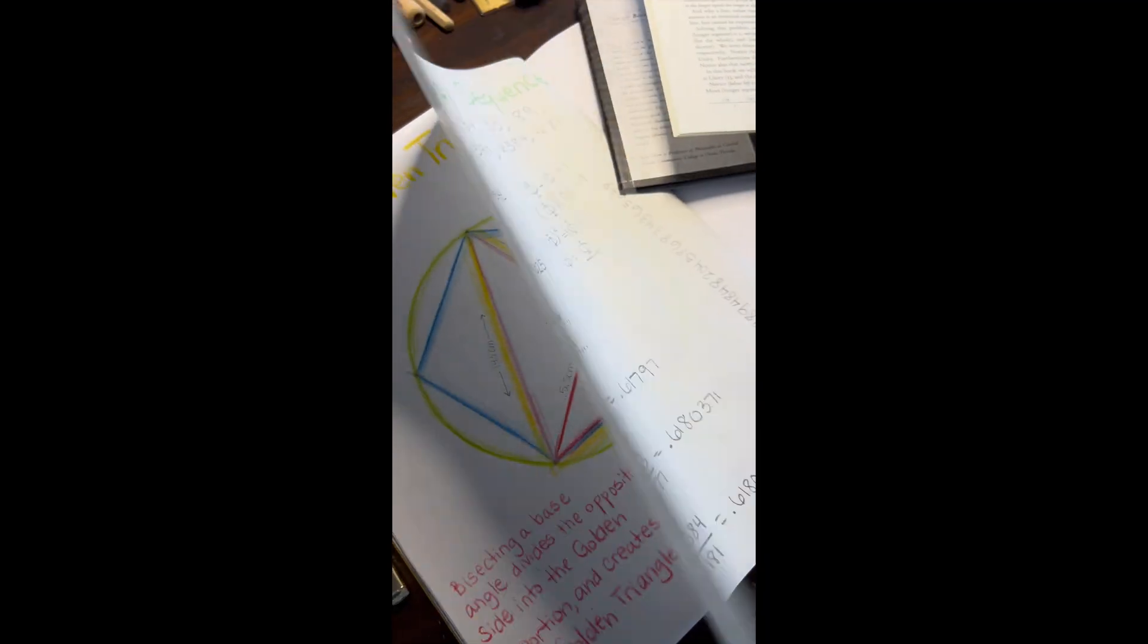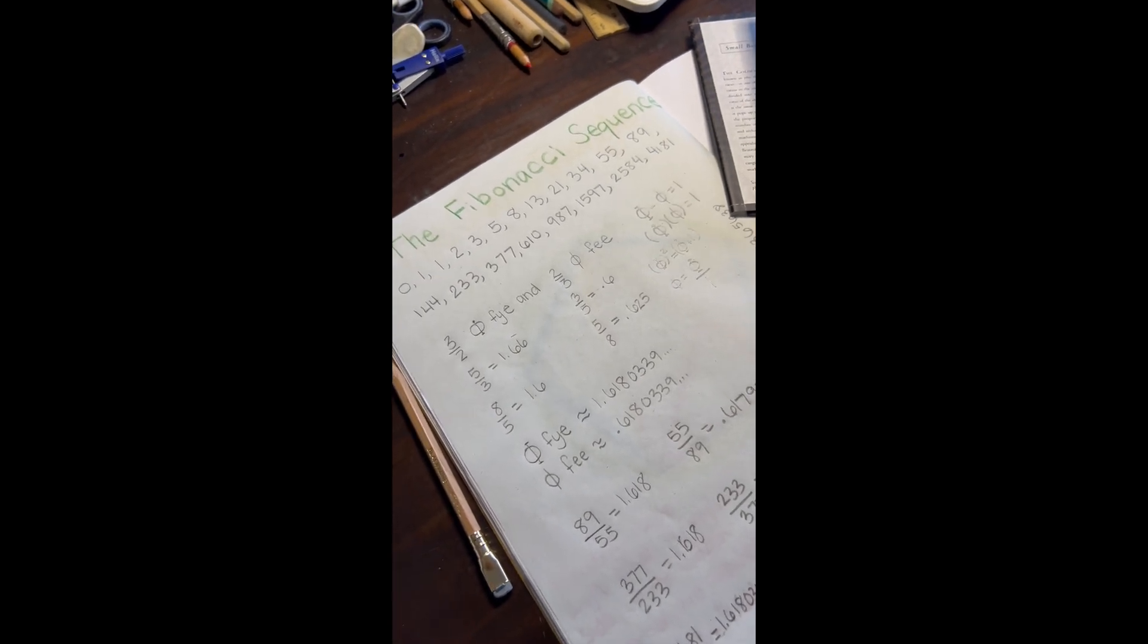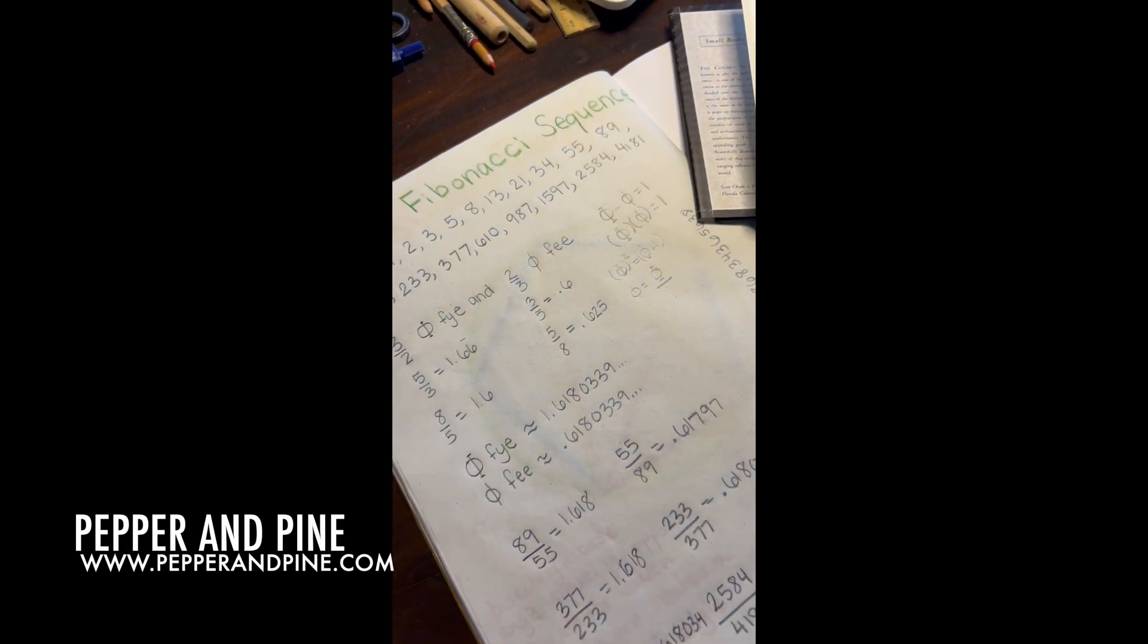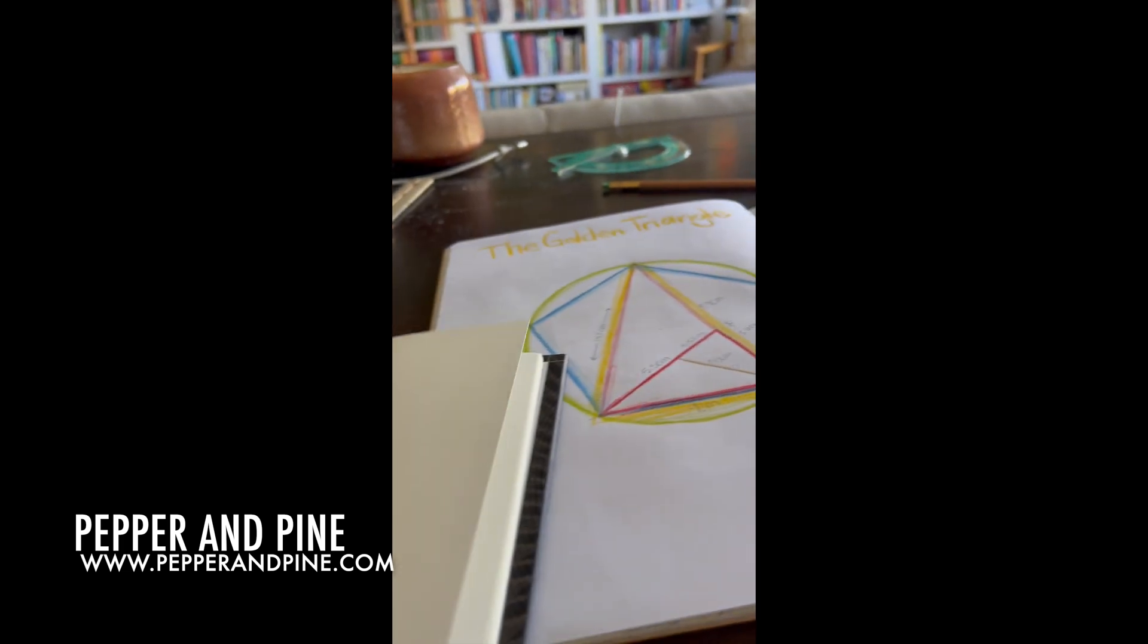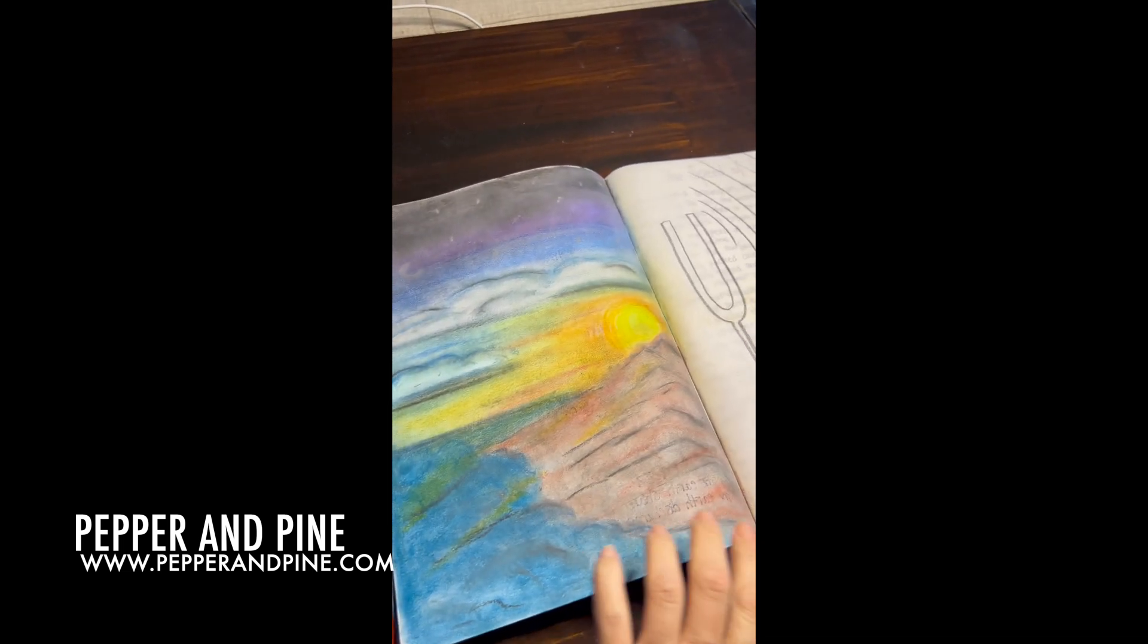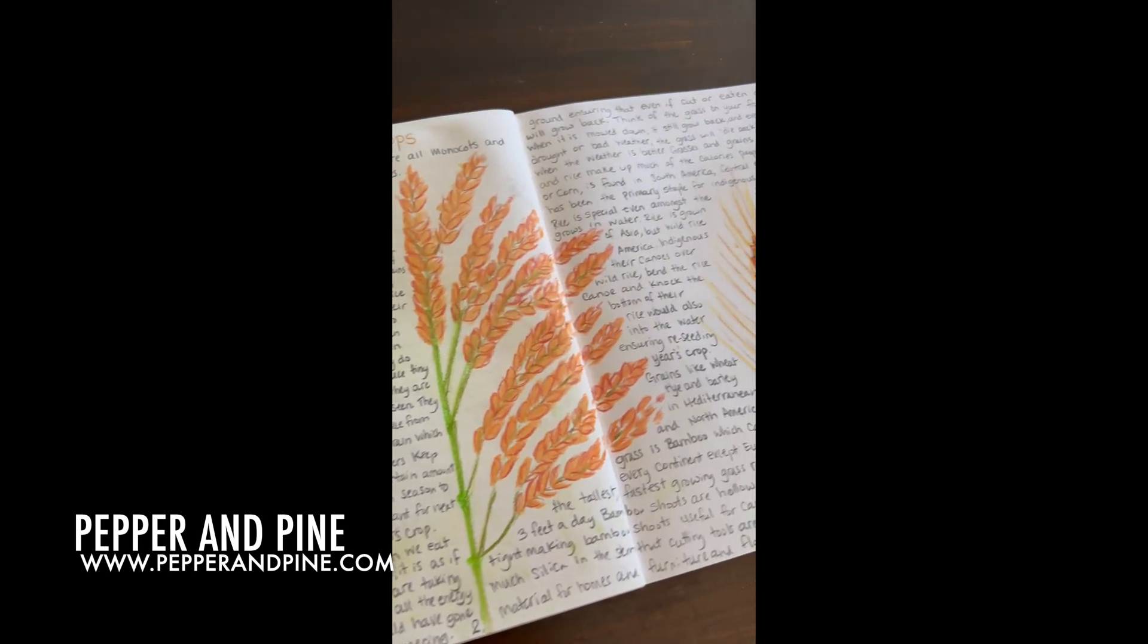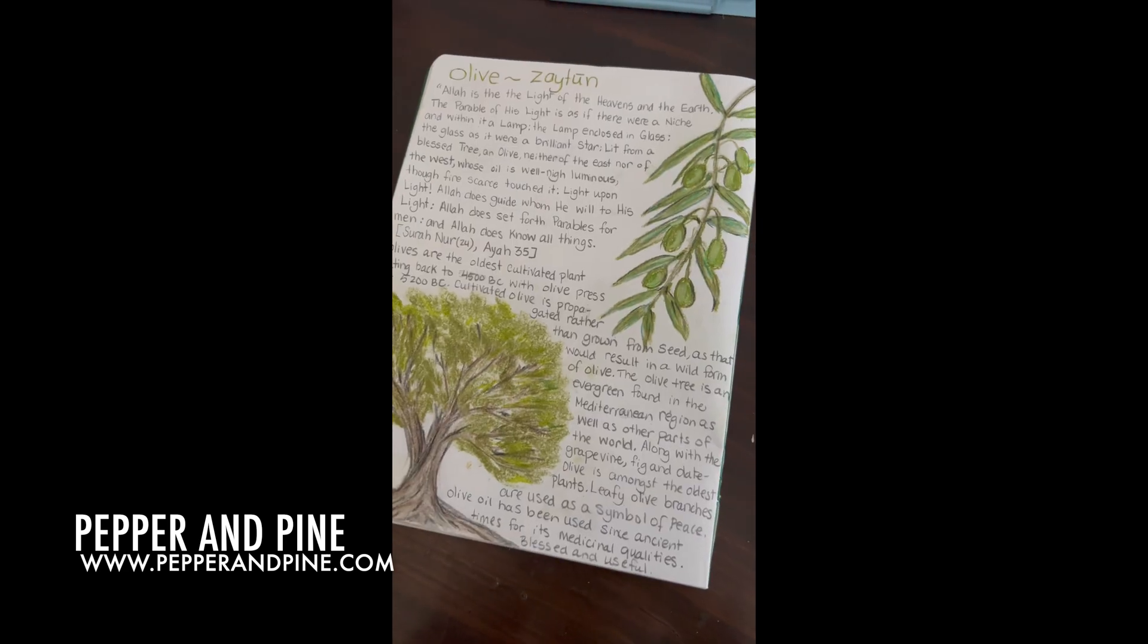So that completed our lesson for the Fibonacci sequence. I hope that you enjoyed this look at how we do our homeschooling lessons, especially for our geometry and our math. Don't forget to check out the blog post that accompanies this video for more information as well as the books and the resources that we're using for our main lesson block. You can find that link down in the description box below. And if you'd like to see how we're homeschooling on a daily basis, you can find me on Instagram and now on TikTok at Pepper and Pine.